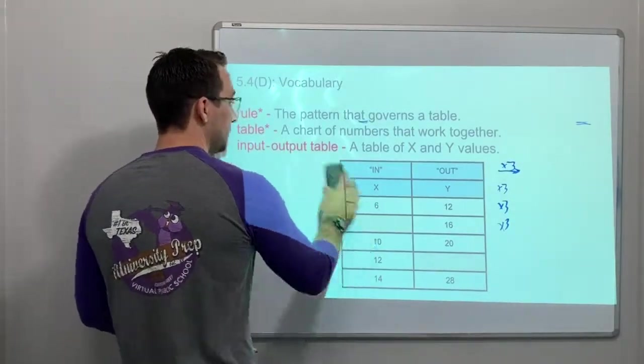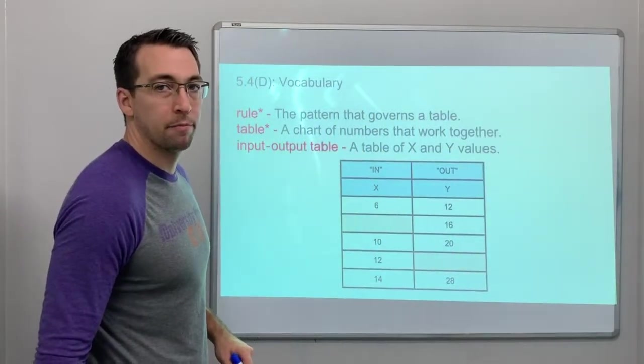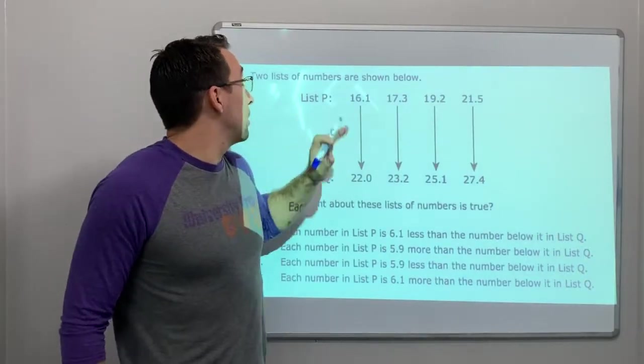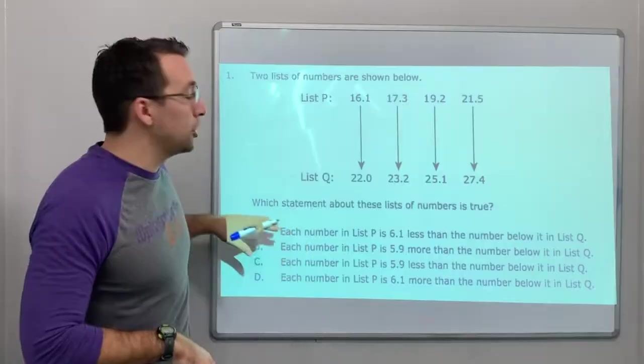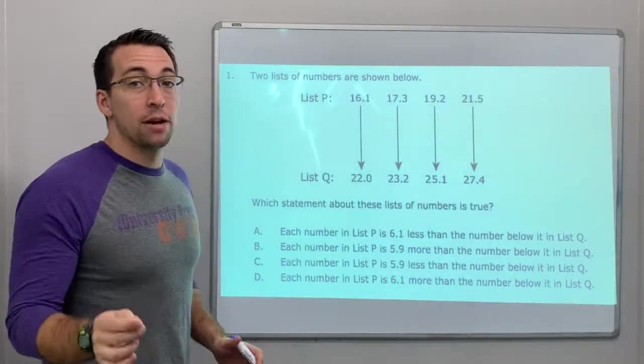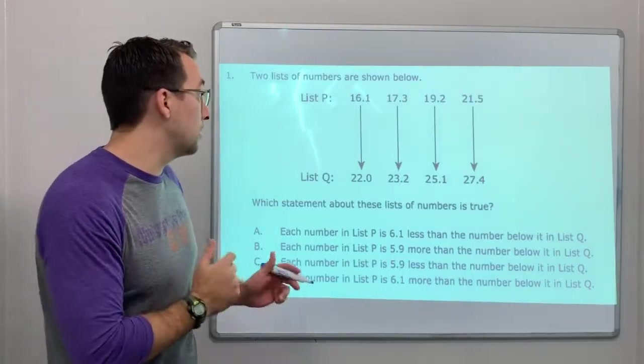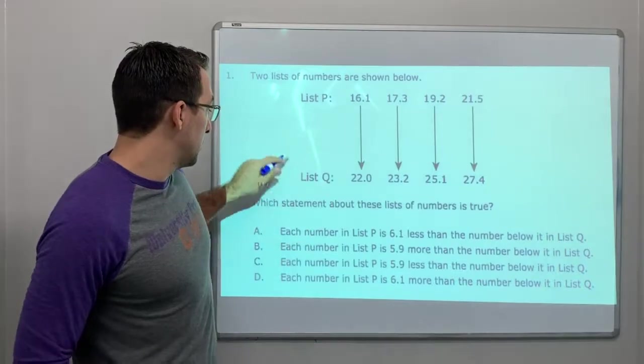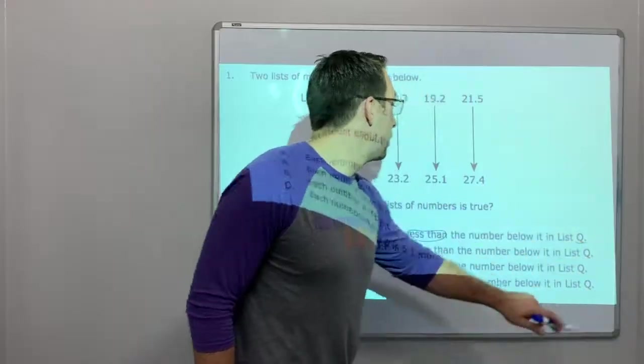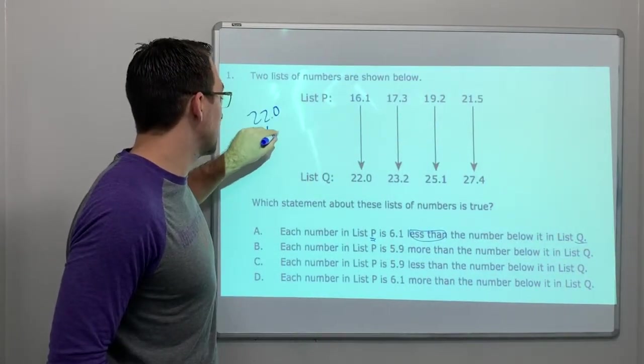All right. So, more vocab. We'll get on with it. Two lists of numbers are shown below. Great. Which statement about these lists of numbers is true? Each number in list P is 6.1 less than the number below it in list Q. Well, let's see. List P is less than Q. So, let's look. 22.0 minus 6.1.